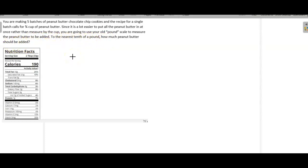First of all, if you look at this, you're making five batches, and a single batch calls for three quarters of a cup of peanut butter. So before we even worry about how many pounds it's going to be, we want to know that if you're going to take three quarters of a cup per batch, you're going to multiply that by five batches.